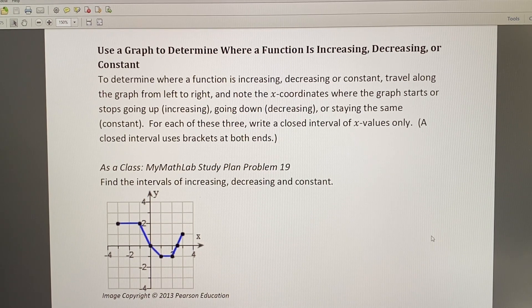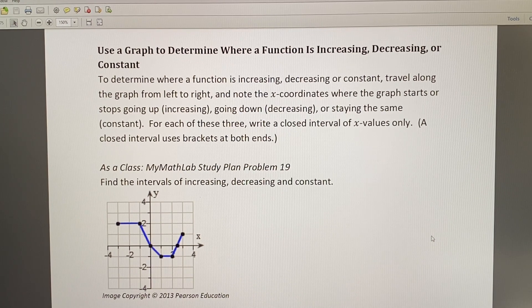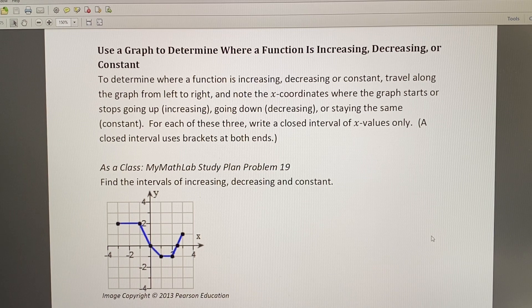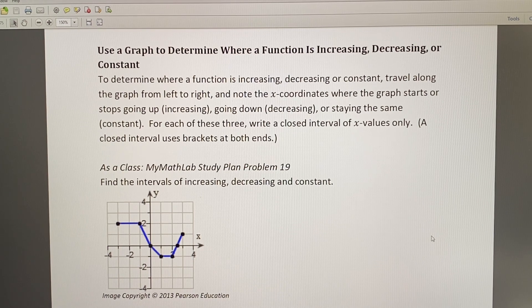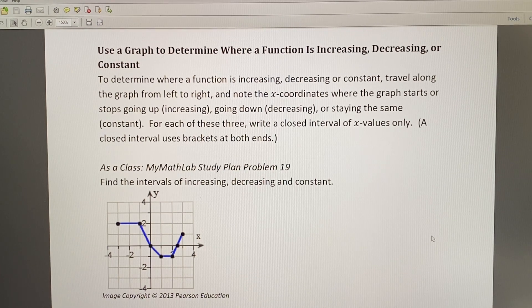To determine where a function is increasing, decreasing, or constant, travel along the graph from left to right and note the x-coordinates where the graph starts or stops going up, which we call increasing, going down, which we call decreasing, or staying the same, which we call constant.